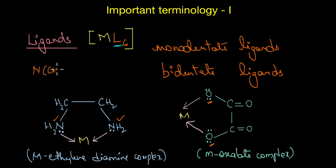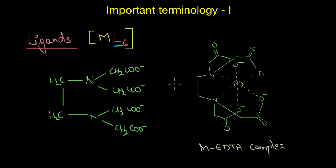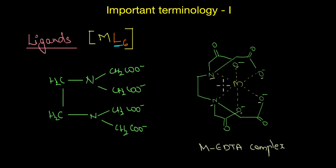When several donor atoms are present in a single ligand, such as in N(CH2CH2NH2)3, the ligand is said to be polydentate. For example, EDTA is a polydentate ligand — more specifically, a hexadentate ligand — that can bind to a metal atom through two nitrogen atoms as well as four oxygen atoms, as you can see here. This ligand binds to the metal atom through six donor atoms in total.